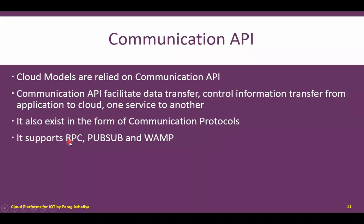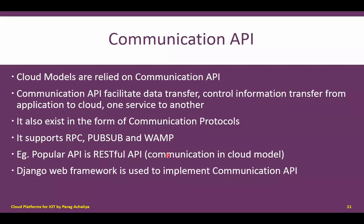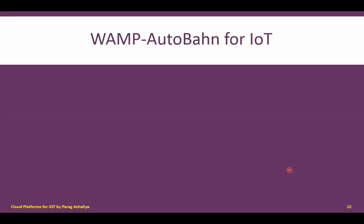Communication APIs support RPC (Remote Procedure Calls), pub-sub (Publish and Subscribe model), and WAMP (Web Application Messaging Protocol). For example, the RESTful API, which we already discussed in a previous session, is an example of an IoT communication API. Another is the Django web framework, used for implementing IoT applications in Python, which can also be treated as an important communication API for IoT application development.